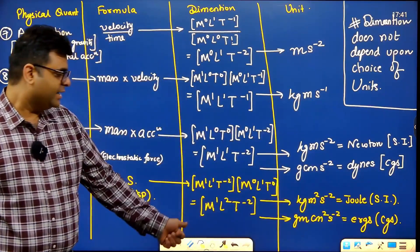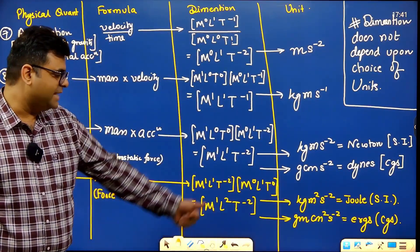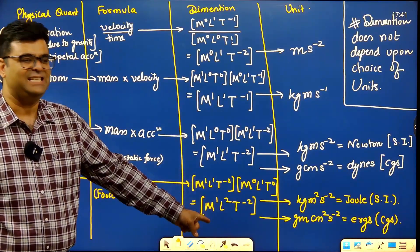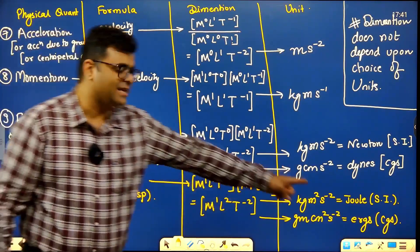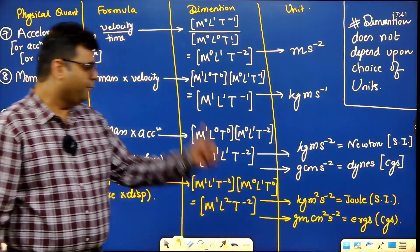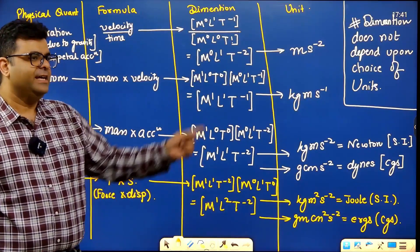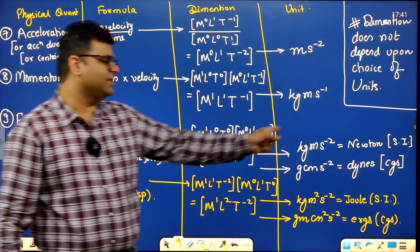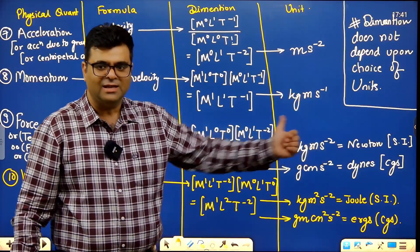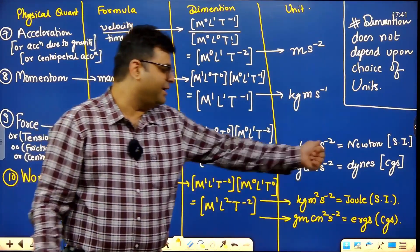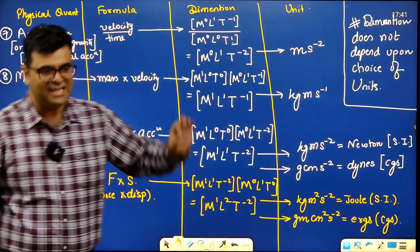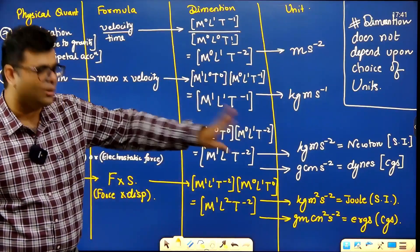In CGS units, work is gram·cm²/s², which is called ergs. For force, the SI unit kg·m/s² is called newton, and the CGS unit gram·cm/s² is called dynes. These are special names given to those units.